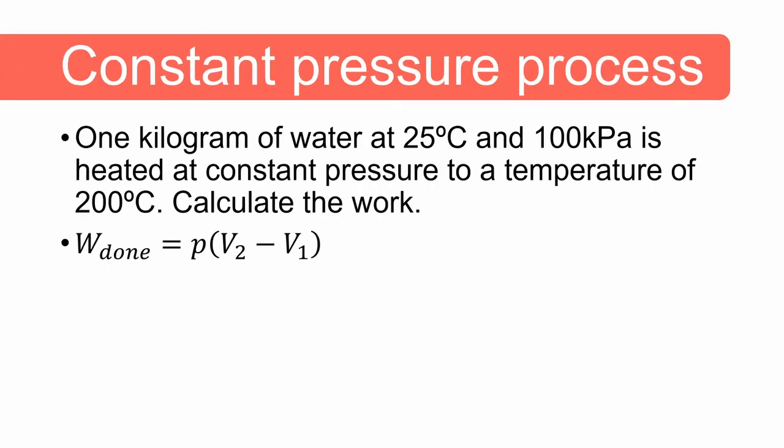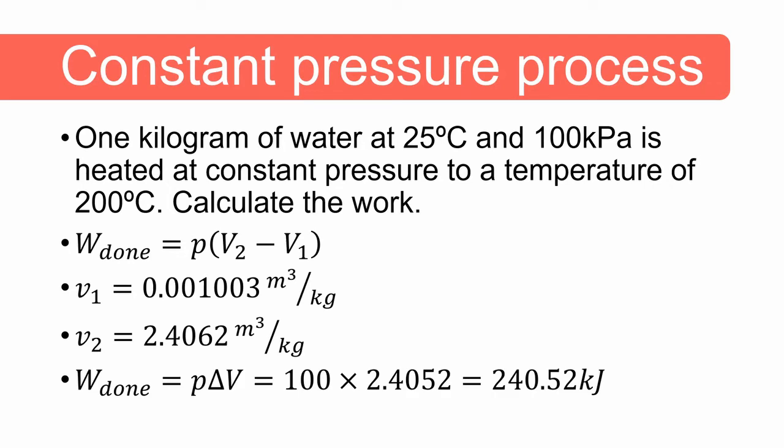The equation that we need to solve is the work done equals the pressure times the change in volume. We know that the pressure is equal to 100 kilopascal but we need to determine the values of v1 and v2. The phase of water at 25 degrees celsius and 100 kilopascal is compressed liquid. We assume that liquid water is incompressible and we can therefore use the specific volume of saturated liquid at 25 degrees celsius and we get 0.001003 cubic meters per kilogram. The phase of water at 200 degrees celsius and 100 kilopascal is superheated vapor and its specific volume is 2.4062 cubic meters per kilogram. You can find these values in the steam tables. Knowing all these values we can calculate the work done and we get an answer of 240.52 kilojoules.